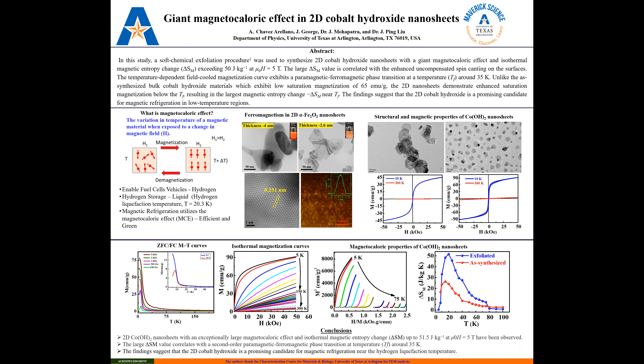This can be used for the liquefaction of hydrogen. Additionally, this type of procedure can be used for magnetic refrigeration, and using this procedure would be a green approach as opposed to the one currently being used. For our interest, we are seeing how we can design a material to liquefy hydrogen gas.